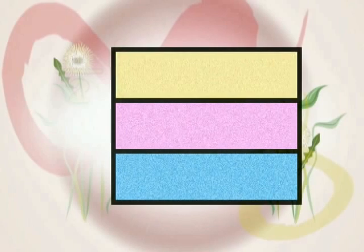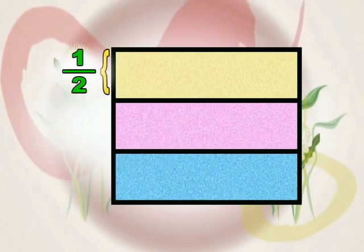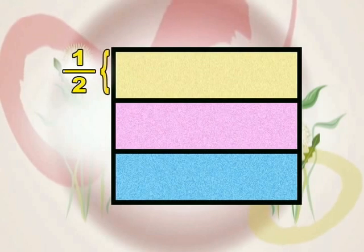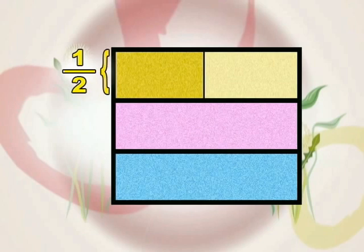To show one-half, which is the first fraction in our equation, we fold the first strip into two equal parts. We then draw a line along the crease and shade one part to show one-half.